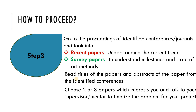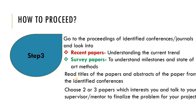Choose two or three papers that interest you and talk to your supervisor, mentor, or senior to finalize the problem for your project. If you follow all these steps, it will help you identify the problem broadly. You may not arrive at the specific objectives or key performance indicators of your project yet — that's okay. But you will be able to identify the broader problem. I will give you a link to another video where you can learn how to search for papers and what are the important components of a paper. See you in the next video. Thank you.